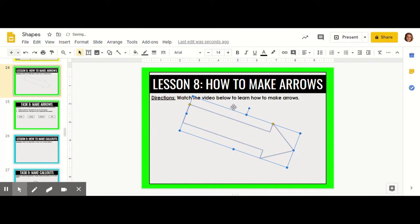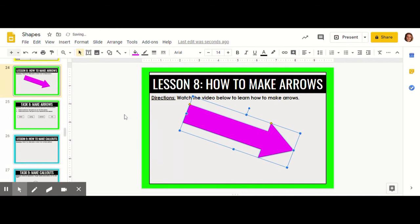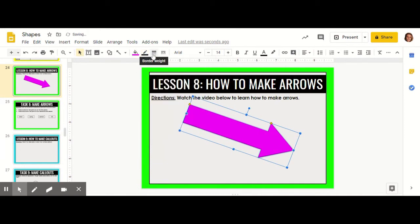Once your arrow is the size that you'd like, you can change the fill color to be any color you choose. You can also change the border color and the border weight. If you'd like to make the border dashed, you can do that also.